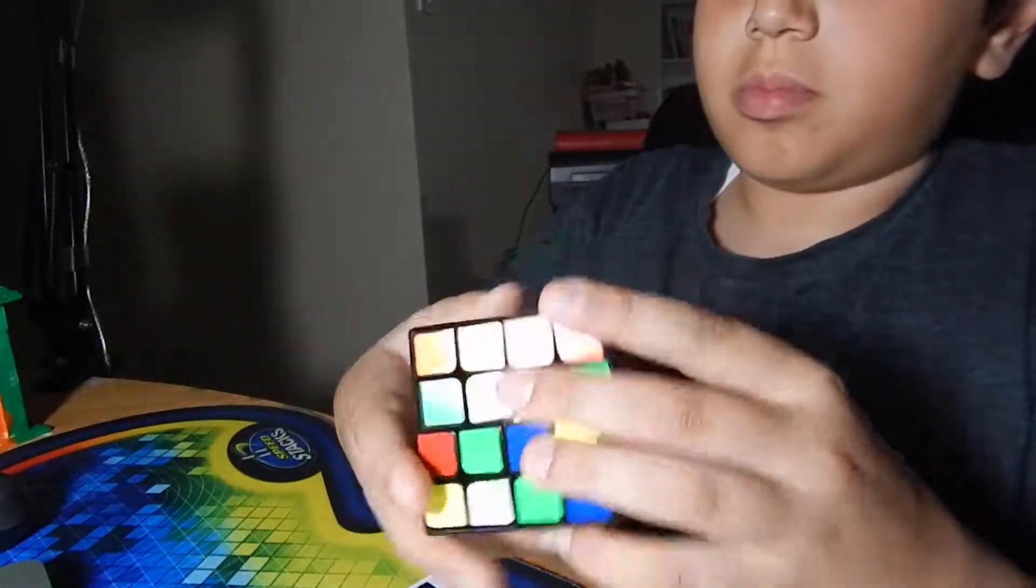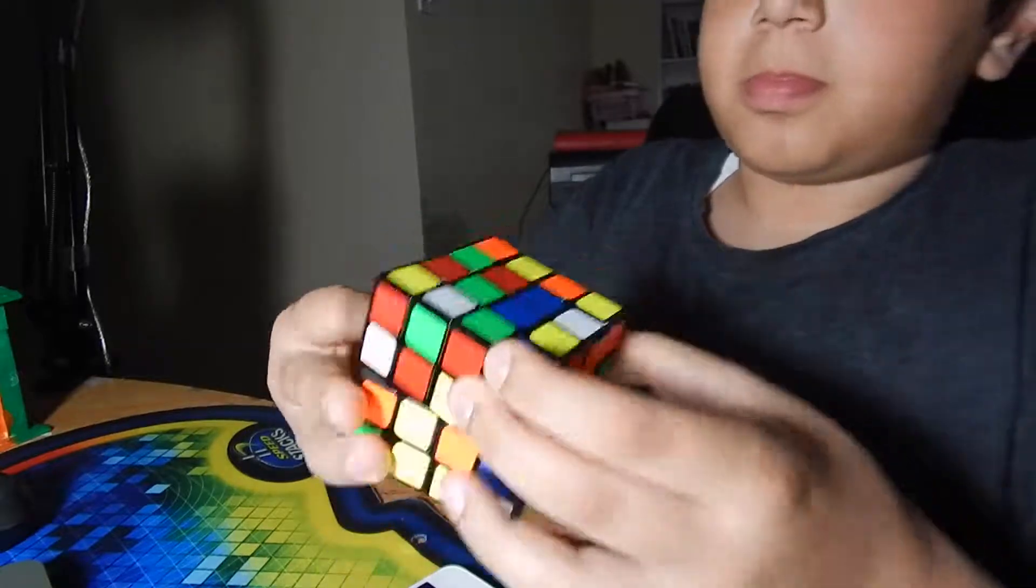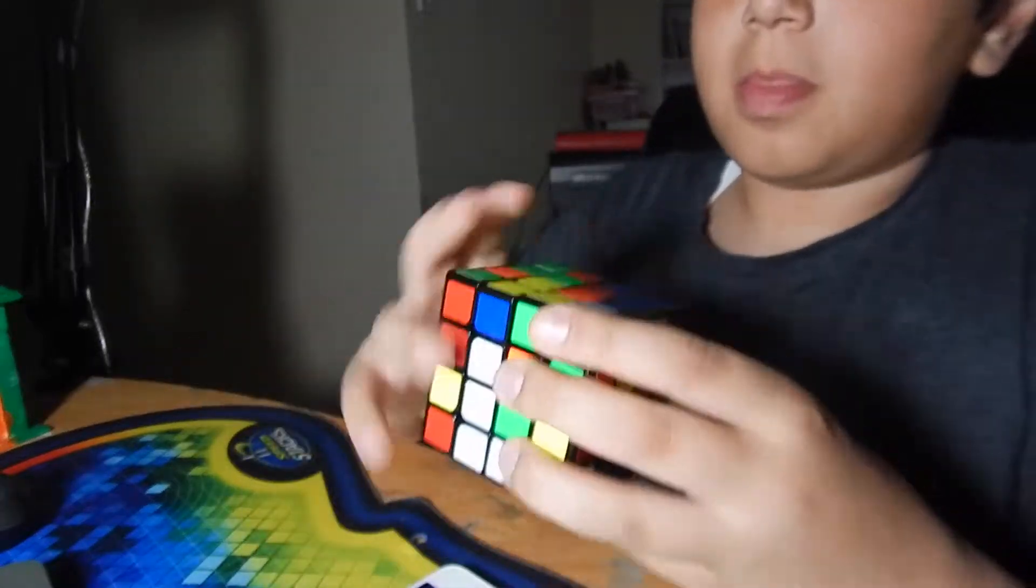Question 1. Why is the WCA thinking about removing 2x2? There is a simple answer to this. Records.